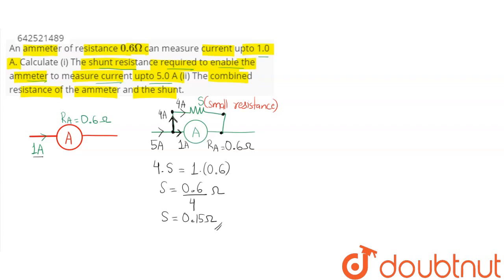In the second part, we are asked for the combined resistance of the ammeter and the shunt. As we can see, the resistance of the ammeter and the shunt are connected in parallel, so we need their equivalent resistance.